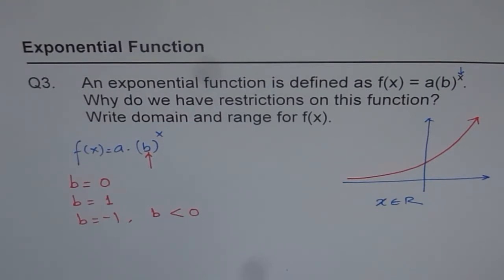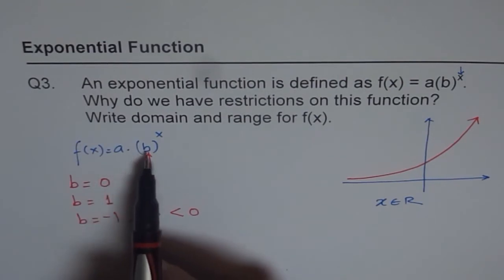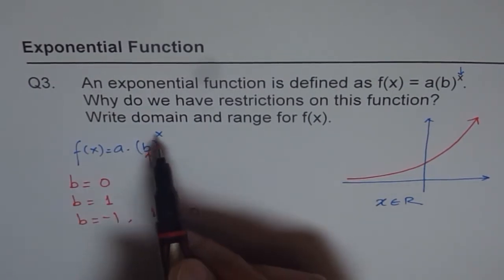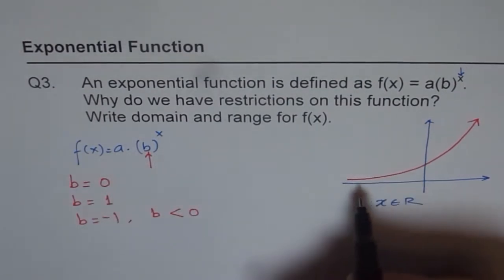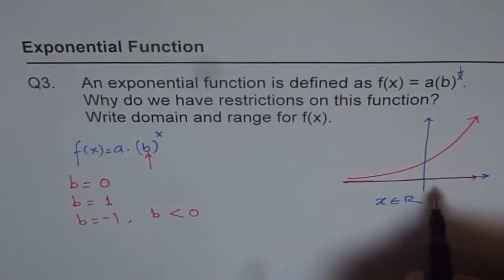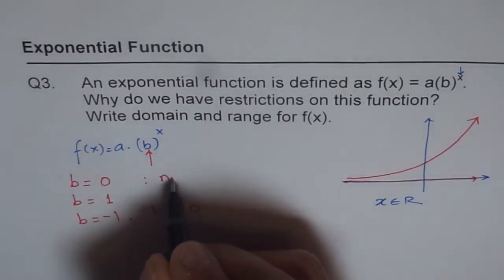Now exponential functions are functions which are increasing all the way. If I put b equals to 0, then what do I get? For b equals to 0, anything to the power of 0 will be 0, 0 times anything will be 0. So I get a line along the x-axis, which is not an exponential function. So this is not exponential.